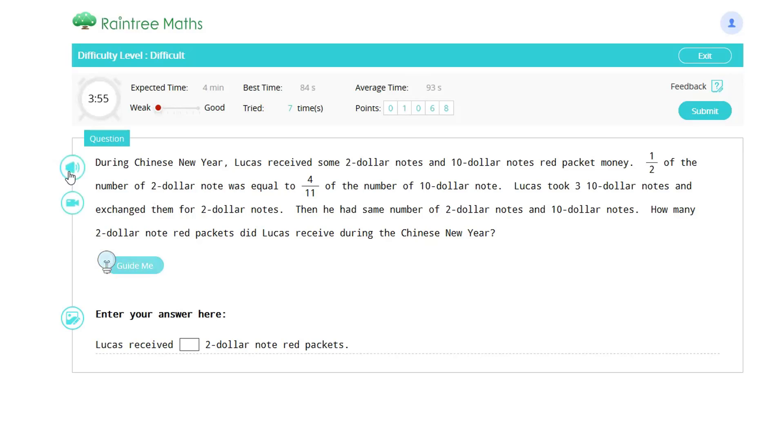During Chinese New Year, Lucas received some $2 notes and $10 notes red packet money. 1/2 of the number of $2 notes was equal to 4/11 of the number of $10 notes.